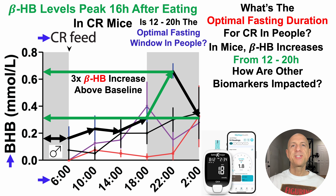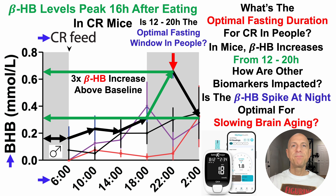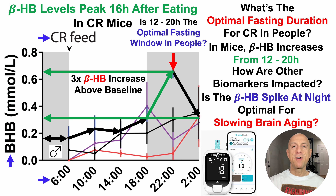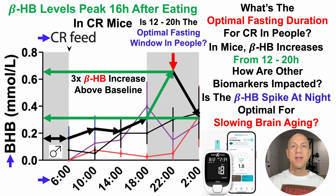There's also an additional question: is that spike in beta-hydroxybutyrate in the middle of the night optimal for slowing brain aging? There's emerging data that beta-hydroxybutyrate may improve glymphatic function — the brain's waste clearance system that's active during sleep. Those data are more recently being published, so it's an emerging story. I don't have a video planned for it yet, but that's on the radar — stay tuned.